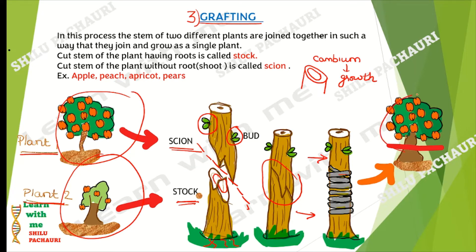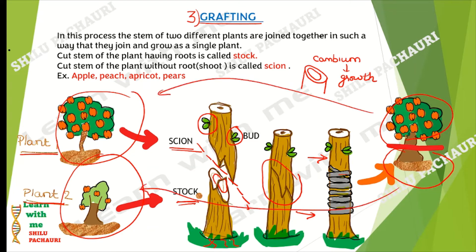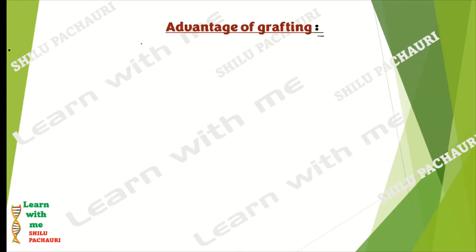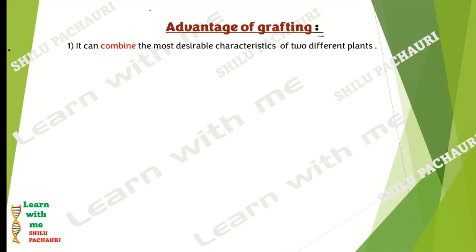The scion produces its original fruits and flowers, while minerals and water are received from the stock. This type of propagation is seen in apple, peach, apricot, and pear. Now let us discuss the advantages of grafting.